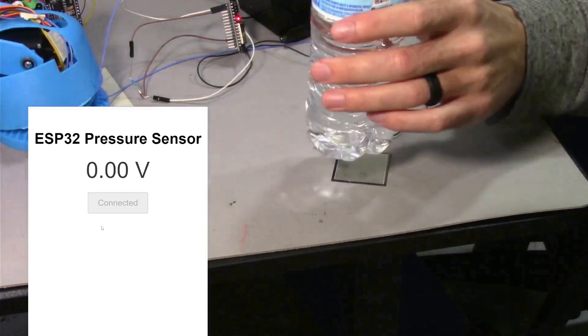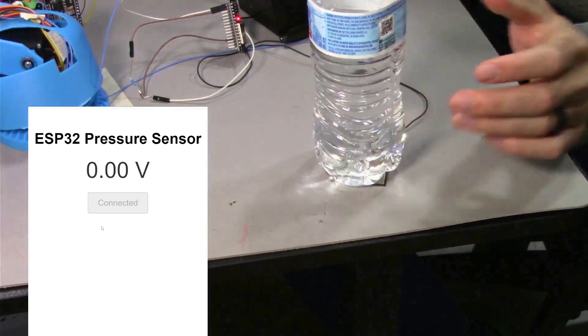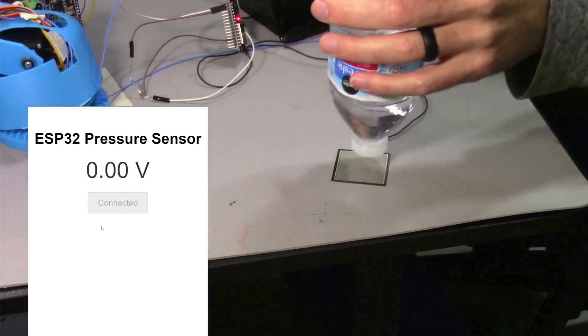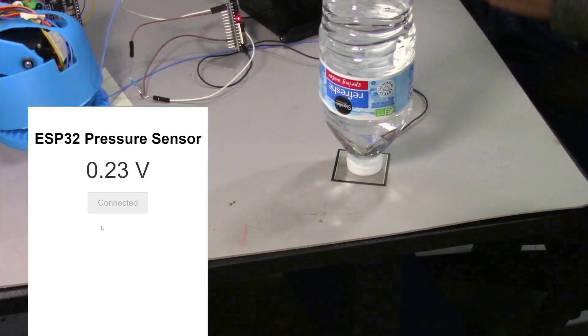You could technically use these as a scale to weigh things. It's kind of hard to place the water bottle on here, but I'll flip it around and get a better rating of how much pressure it's applying.